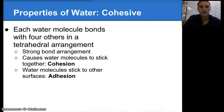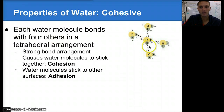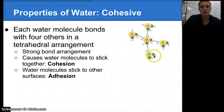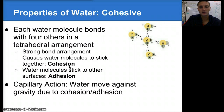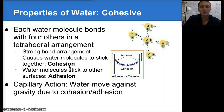Another property of water is its cohesive properties. Each water molecule bonds with four others in a tetrahedral arrangement. The oxygen bonds through hydrogen bonds to two other water molecules, and then each hydrogen bonds individually to a different water molecule. This allows water molecules to stick together — that's called cohesion. If water molecules stick to something else, a different type of surface, that's called adhesion. This leads to something called capillary action, which allows water to move against gravity due to cohesion and adhesion, and is one of the ways water moves up the stems of plants.